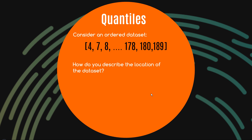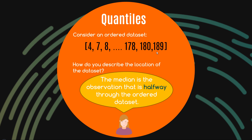We know that the median is the middle number of any given data set, but another way of thinking about it is that the median is the observation that is halfway through the ordered data set. So if you were to go halfway into the data set — here are all the observations in green — the point which is halfway in would be the median.